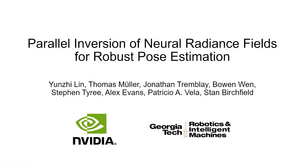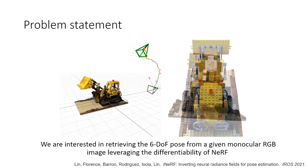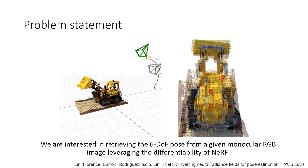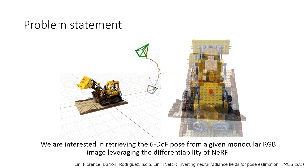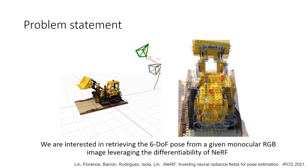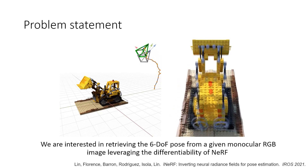Hi everyone, I am honored to introduce our work: Parallel Inversion of Neural Radiance Fields for Robust Pose Estimation. In this work, we are interested in retrieving the 6-DoF pose from a given monocular RGB image, leveraging the differentiability of NeRF.